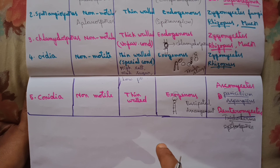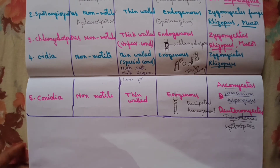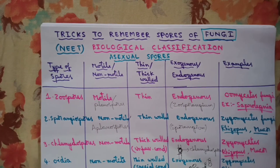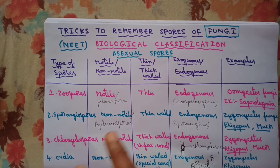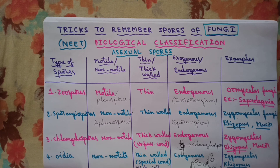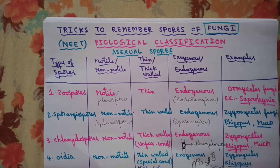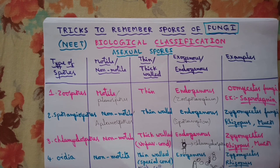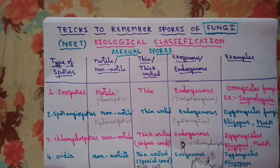In the next video I will be explaining about the different types of sexual spores produced by fungi. I hope you understood this concept well, so you will not be confused between the types of asexual spores produced by fungi — which spores are produced by which class, whether they are thick-walled or thin-walled, motile or non-motile, exogenous or endogenous. Using these tricks, you can practice questions on fungi. Thank you, students.